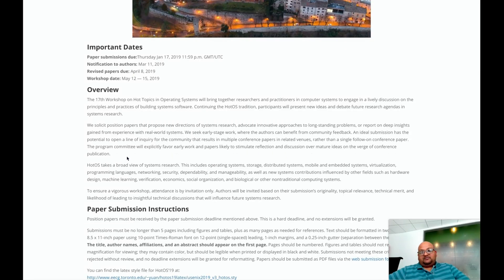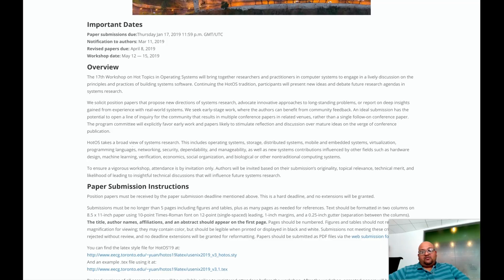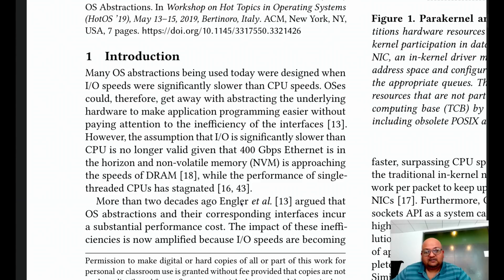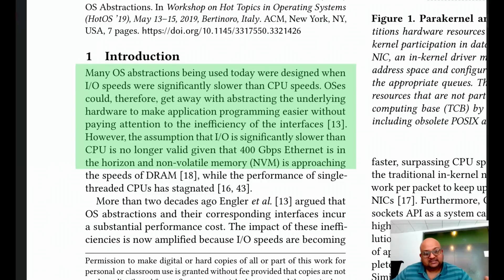This workshop focuses more on early-stage work. The central contention of the paper is that all the operating system abstractions that we currently use — which is, for all practical purposes, basically Unix — were designed back at a time when I/O speeds were much, much slower than CPU speeds. What this meant was that most applications spent a lot of time waiting for I/O, and could burn CPU cycles while they were doing that.